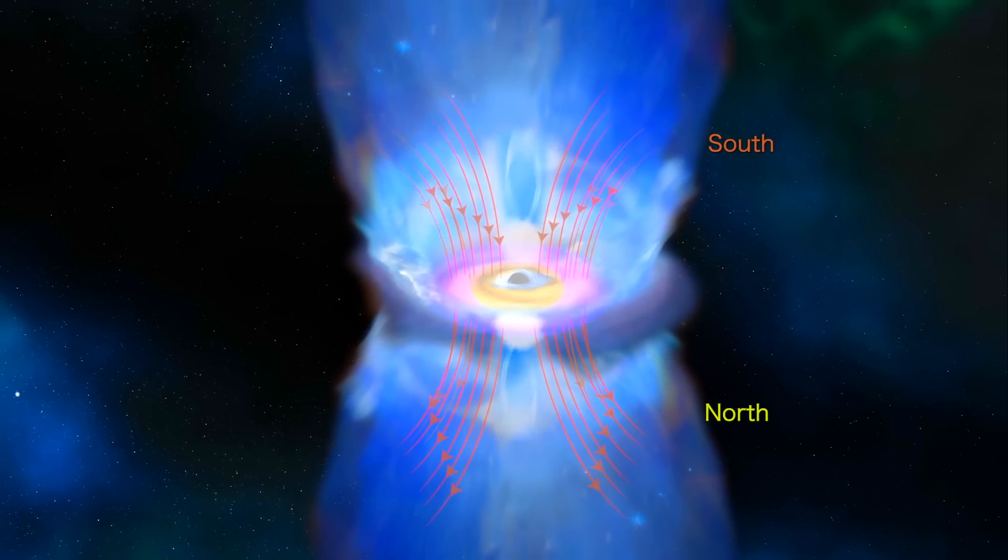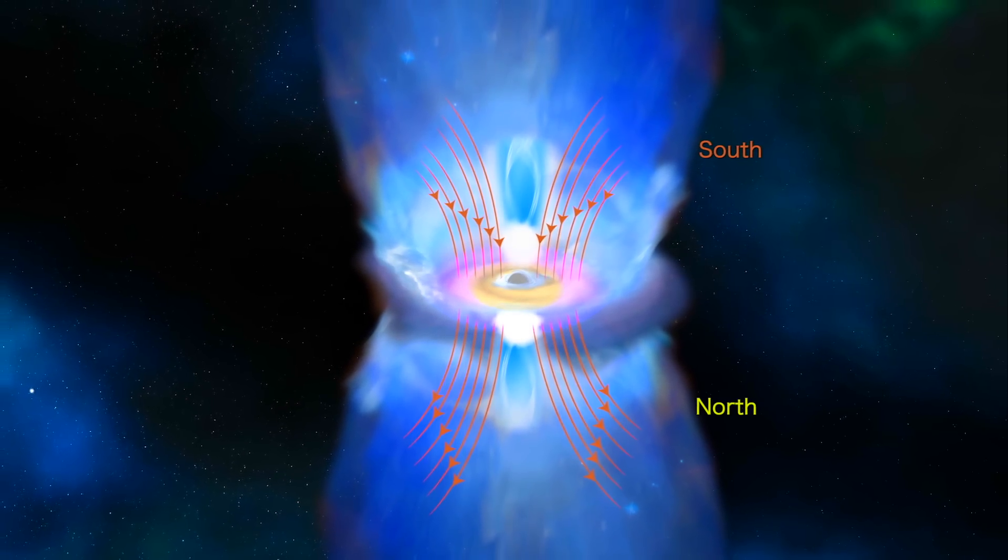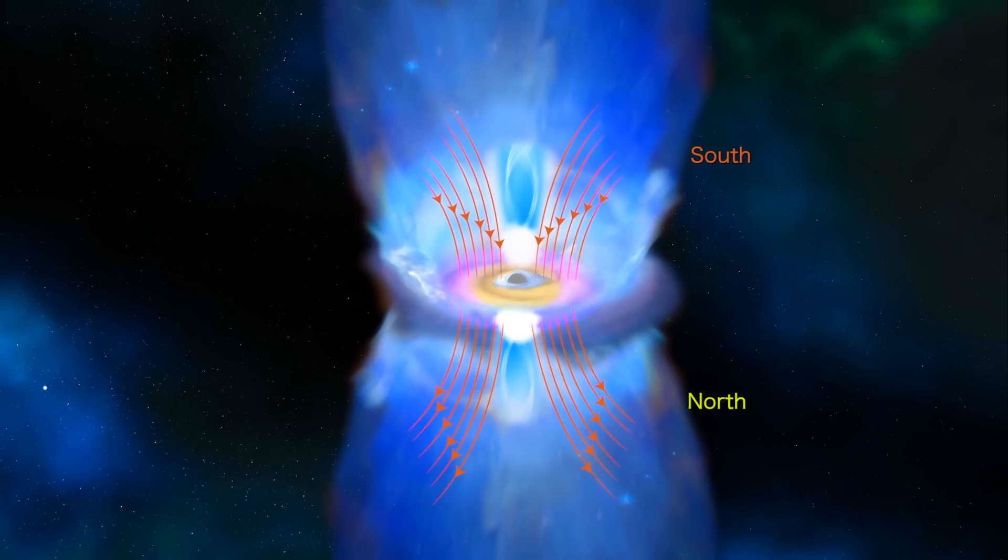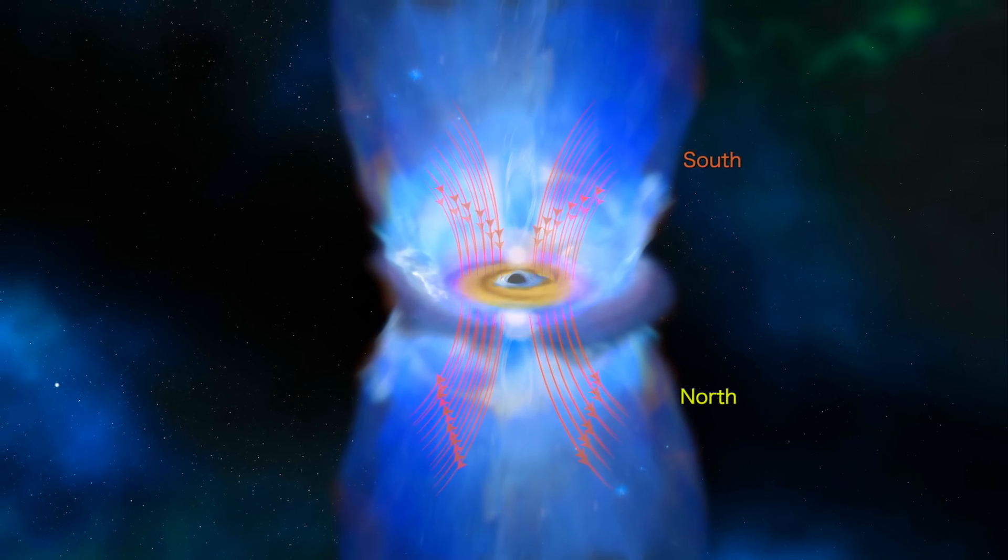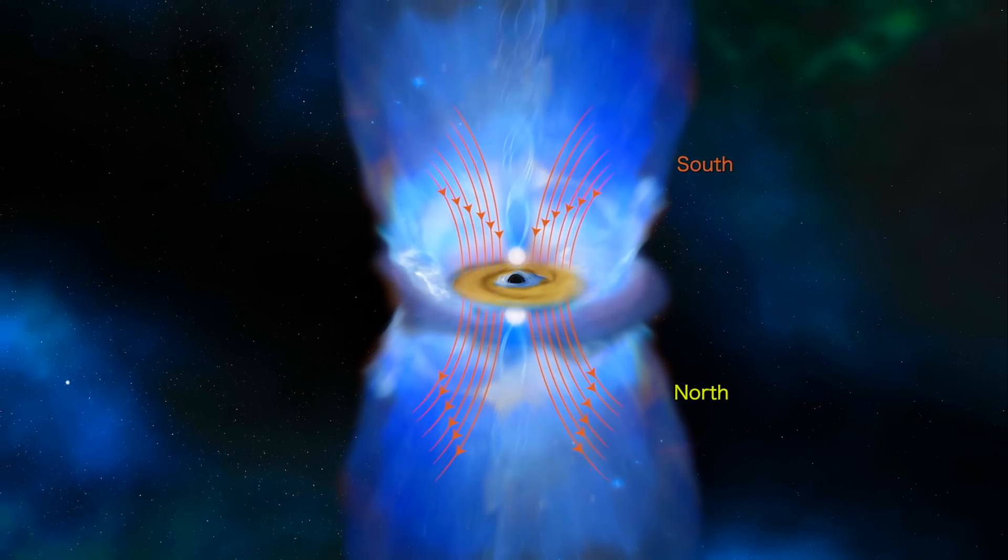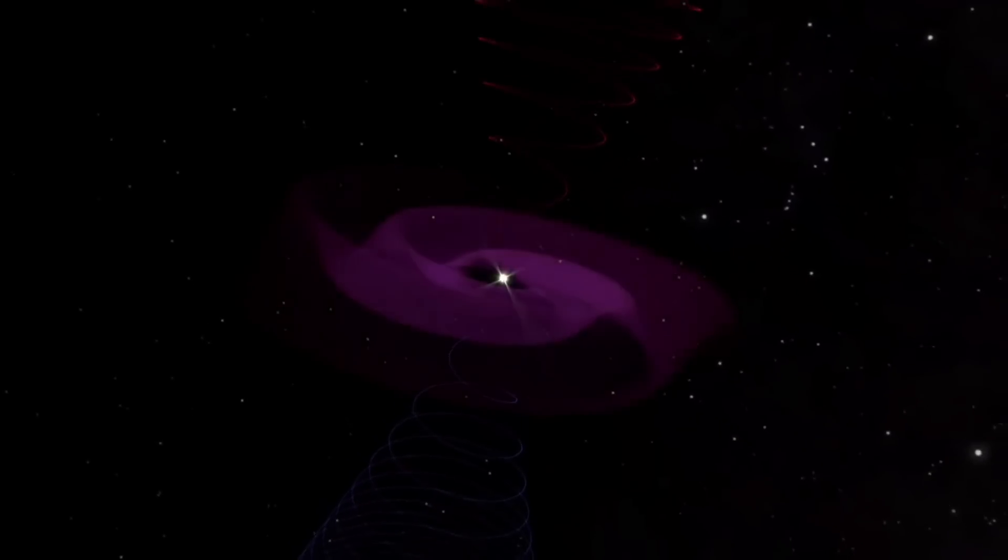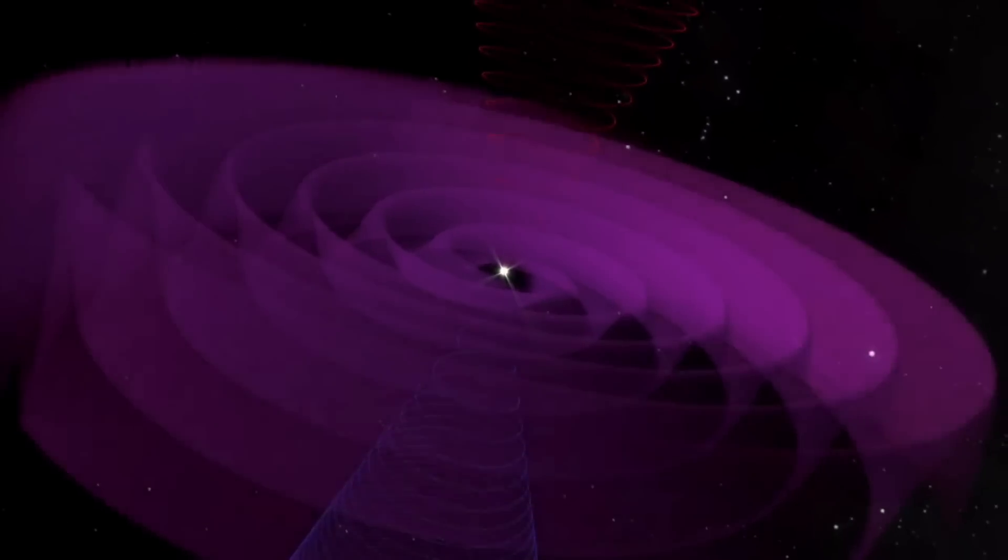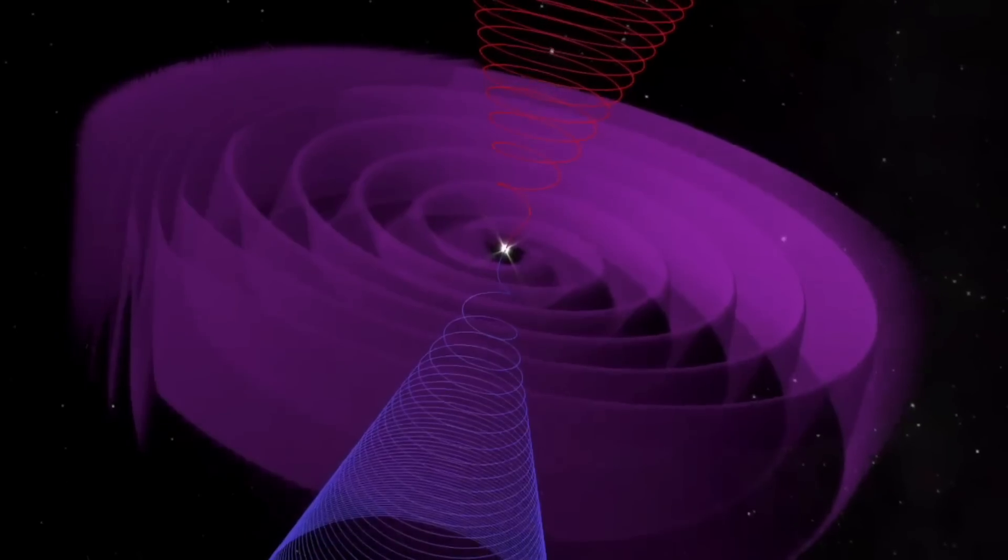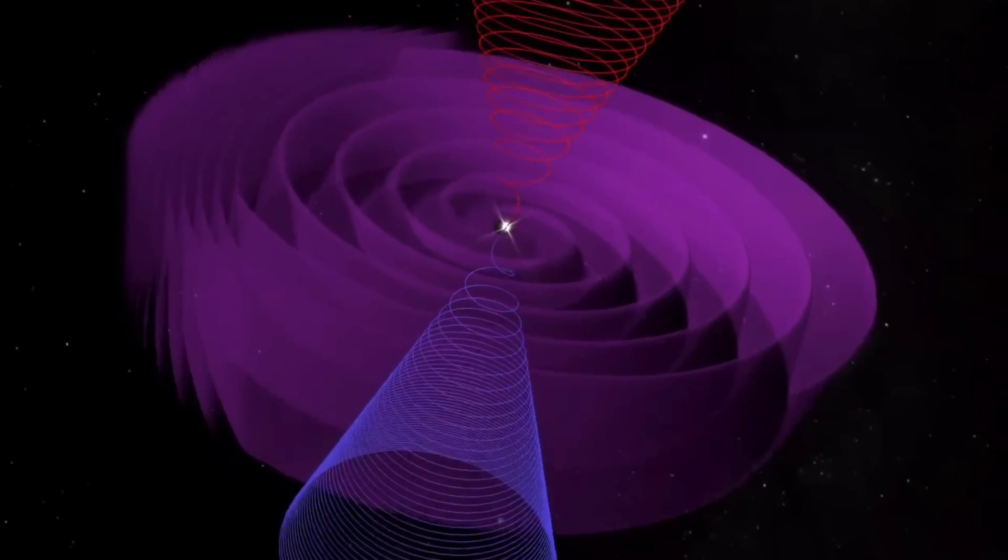And yet, it also has a constant heliospheric current sheet streaming through the solar system that causes the planets to experience a magnetic reversal in the solar wind every couple of days. They know that galaxies have the current sheet and have known it since it was just theory now more than 40 years ago due to understanding the Parker instability.